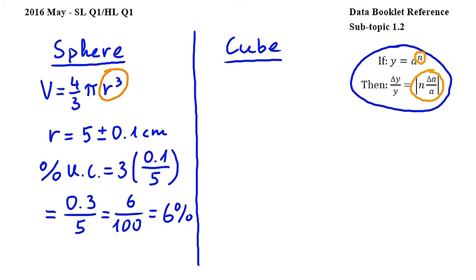Let's now consider the cube. The volume of a cube is equal to side length to the power of 3. And in this question side length is equal to 10 plus minus 0.2 cm.